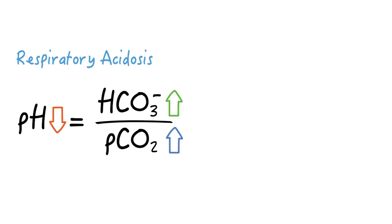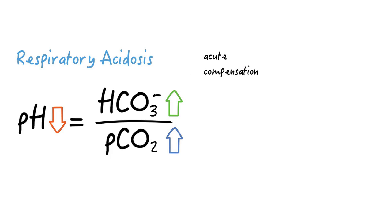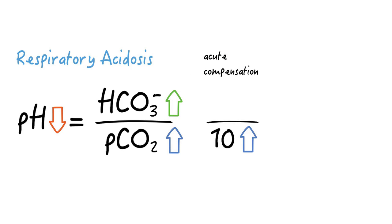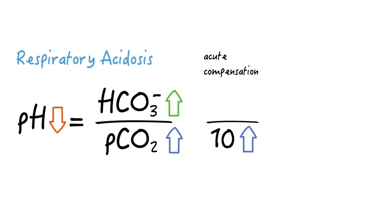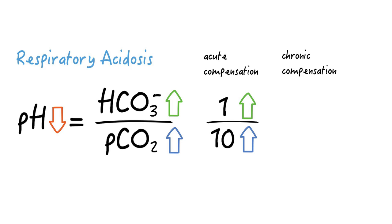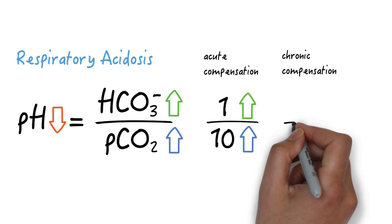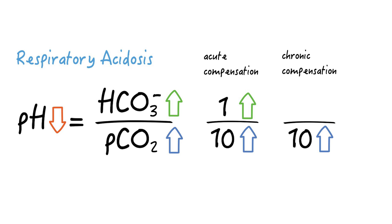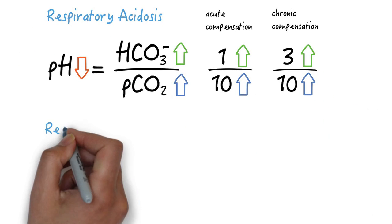In the acute phase, for each 10-unit increase in pCO2 the bicarb will increase by one unit. In the chronic phase the kidneys have more time to adapt, so for every 10-unit increase in pCO2 bicarb will increase by three units.